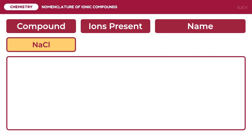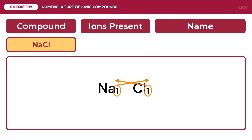For the first example, we are going to identify the ions present in NaCl and also name the compound. The first step is to identify the ions present by separating the two ions together with their subscripts. Since there are no subscripts, they will automatically be 1, giving us sodium sub 1 and chlorine sub 1. To identify the charges, we do a reverse criss-cross on the subscripts — the subscript of one ion will be the charge of the other. The subscript 1 of sodium will be the charge of chlorine, specifically negative 1, because chlorine will form an anion. After doing the reverse criss-cross, we now have Na⁺ and Cl⁻.